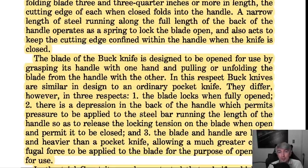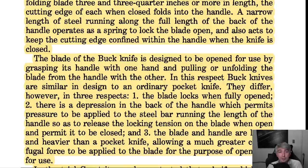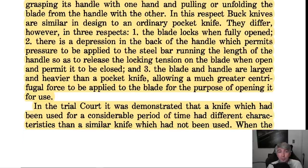They go on to describe what these knives are. All of these knives were designed with a folding blade three and three-quarter inches or more in length. The cutting edge when closed folds into the handle. A narrow length of steel running along the full length of the back of the handle operates as a spring to lock the blade open and also keeps the cutting edge confined within the handle when the knife is closed. The blade is designed to be opened by grasping the handle with one hand and pulling the blade from the handle with the other — similar in design to an ordinary pocket knife. The blade locks when fully opened.